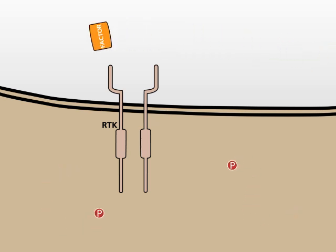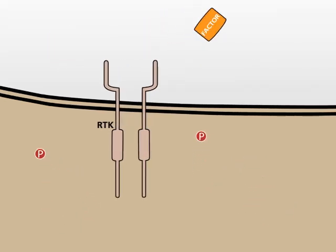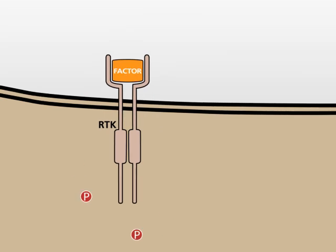Two pathways begin with the activation of a receptor belonging to the family of receptor tyrosine kinases by an extracellular growth factor. Binding of the factor leads to the dimerization of the receptor monomers and the heterologous autophosphorylation of the monomers.